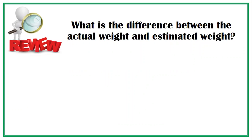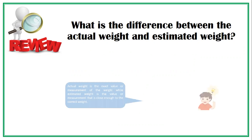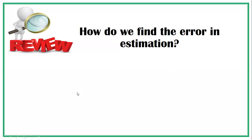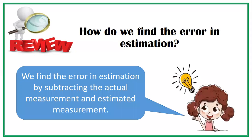Can you tell me what is the difference between the actual weight and the estimated weight? The actual weight is the exact value or measurement of the weight, while the estimated weight is the value or measurement that is close enough to the correct weight. We find the error in estimation by subtracting the actual measurement and the estimated measurement.